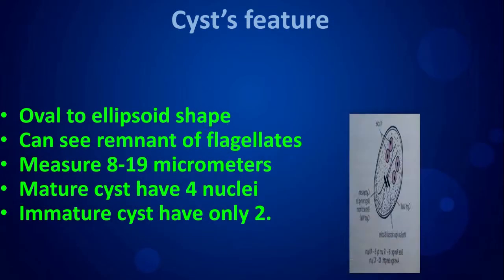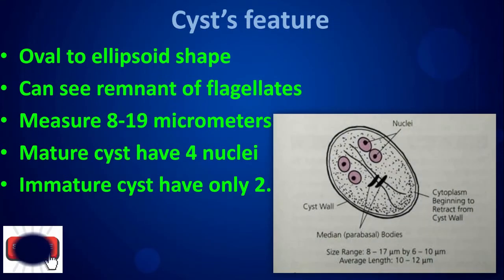Cyst features: oval to ellipsoid shape, remnants of flagella can be seen, measures 8 to 19 micrometers. Mature cysts have four nuclei; immature cysts have only two.